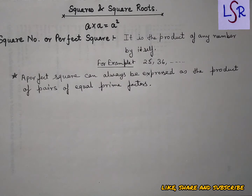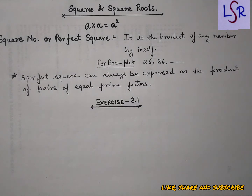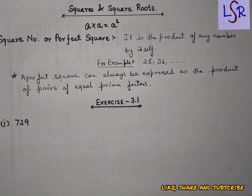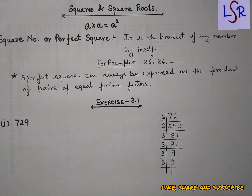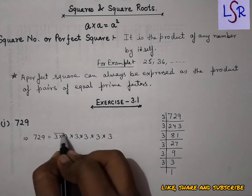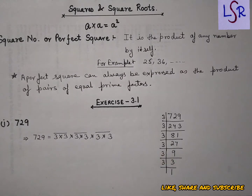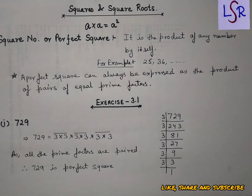A perfect square can always be expressed as the product of pairs of equal prime factors. Now let's start with Exercise 3.1. The first question asks which of the following natural numbers are perfect squares, and you have to support your answer with a reason. The first part is 729. We first find the prime factors of 729. We can see that we are getting pairs of 3, and since all of the prime factors are paired, therefore this is a perfect square.